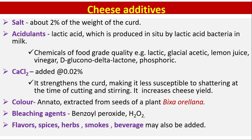Color: Annatto is used, extracted from the seeds of the plant Bixa orellana. Bleaching agents: some customers prefer white cheese; in such cases, bleaching agents such as benzoyl peroxide or hydrogen peroxide are used. Flour, spices, herbs, smoked beverages may also be added.